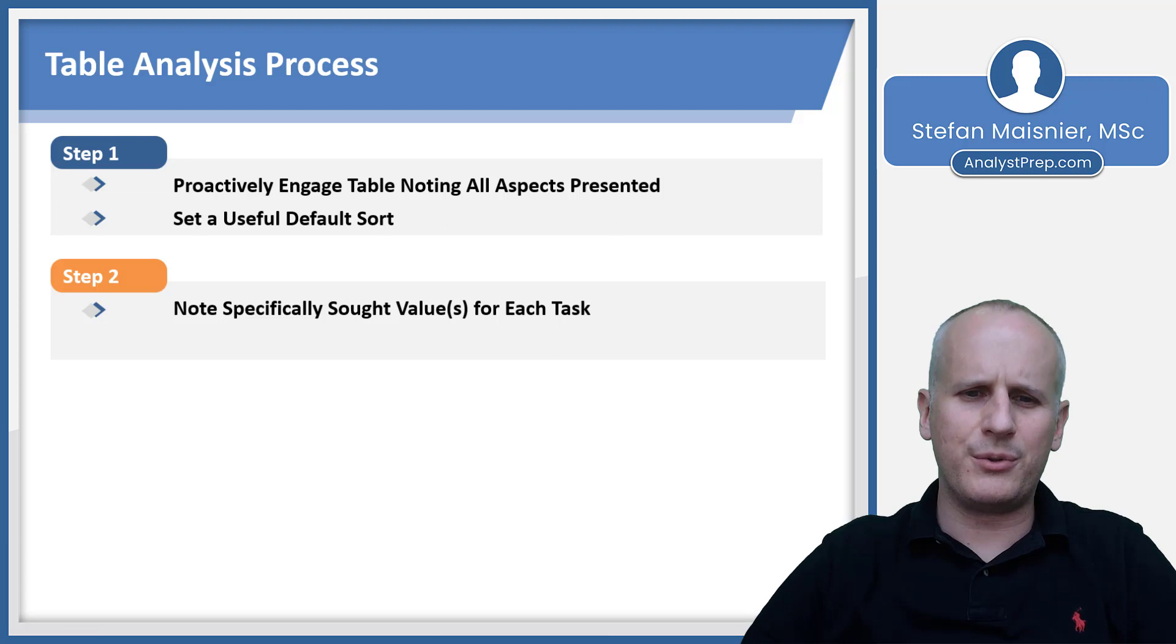Then you want to note the specifically sought value for each task. There are different types of questions they can ask, and you just have to make sure that you're answering whatever they're seeking the answer to. And you want to, again, beware of mistaking the details. The details matter here, and they will definitely use some trap answers that utilize kind of cheap tricks if you're not careful.